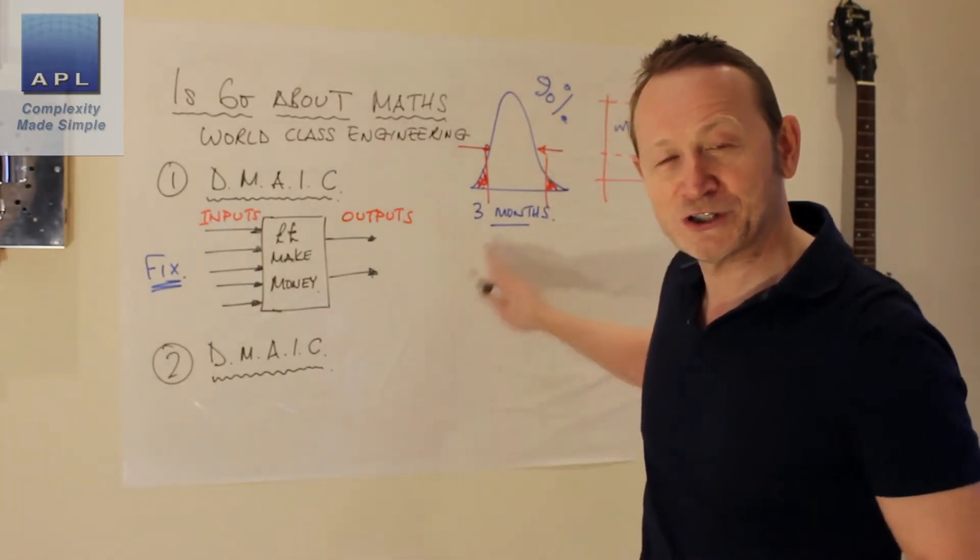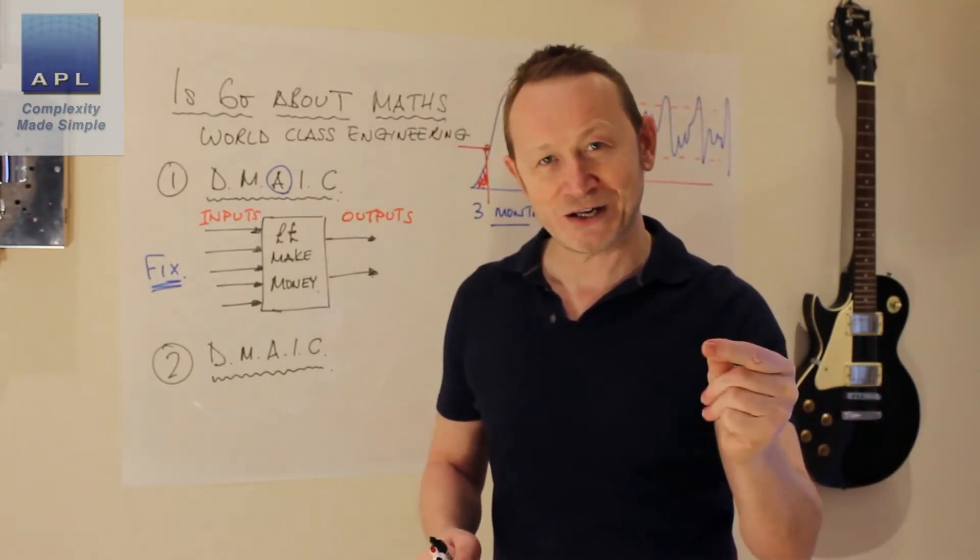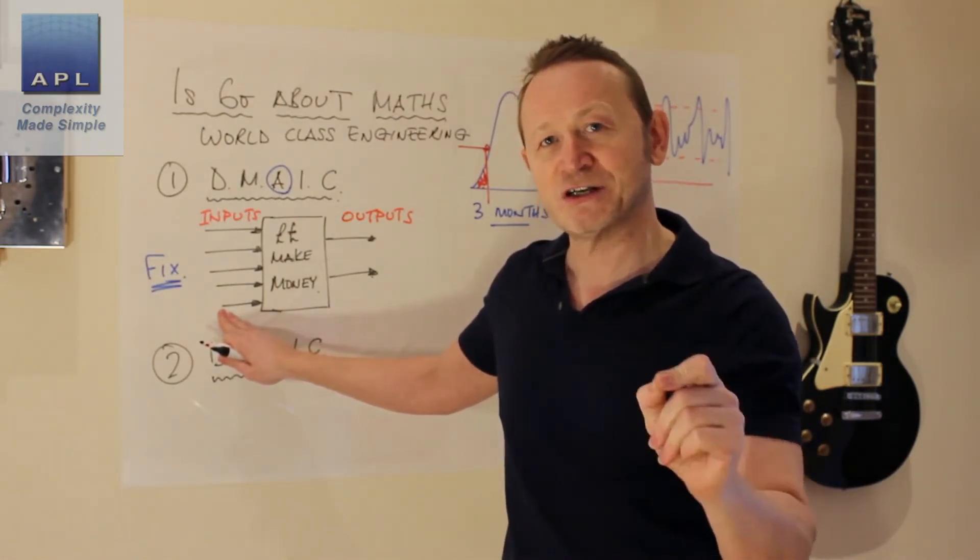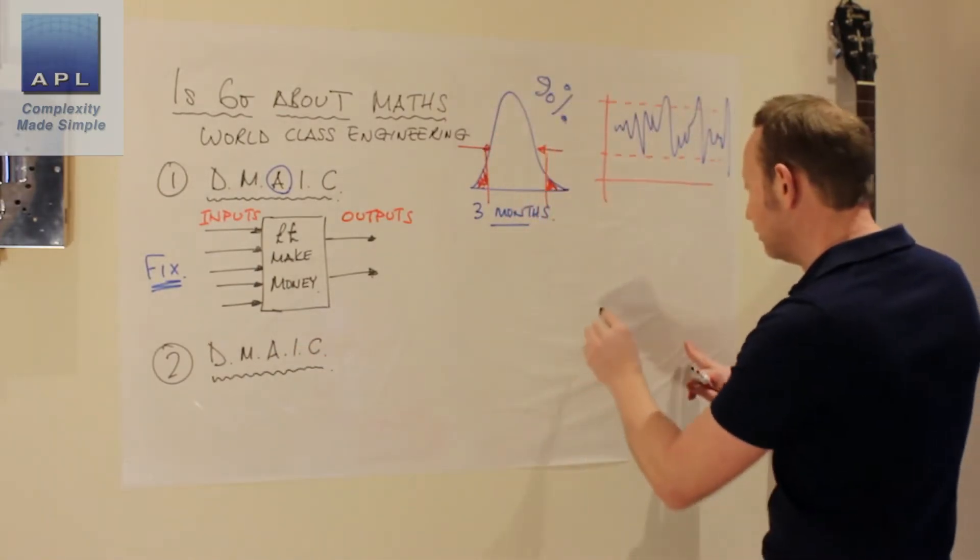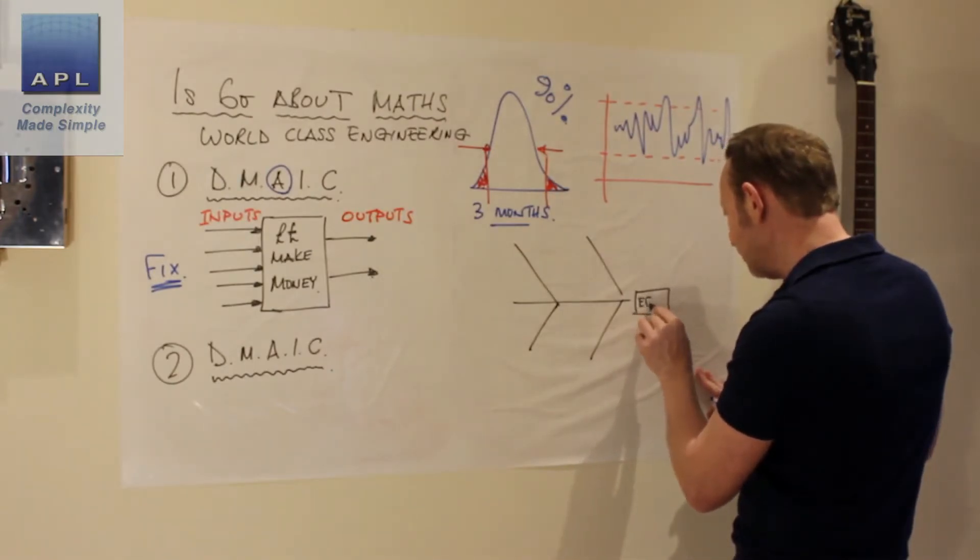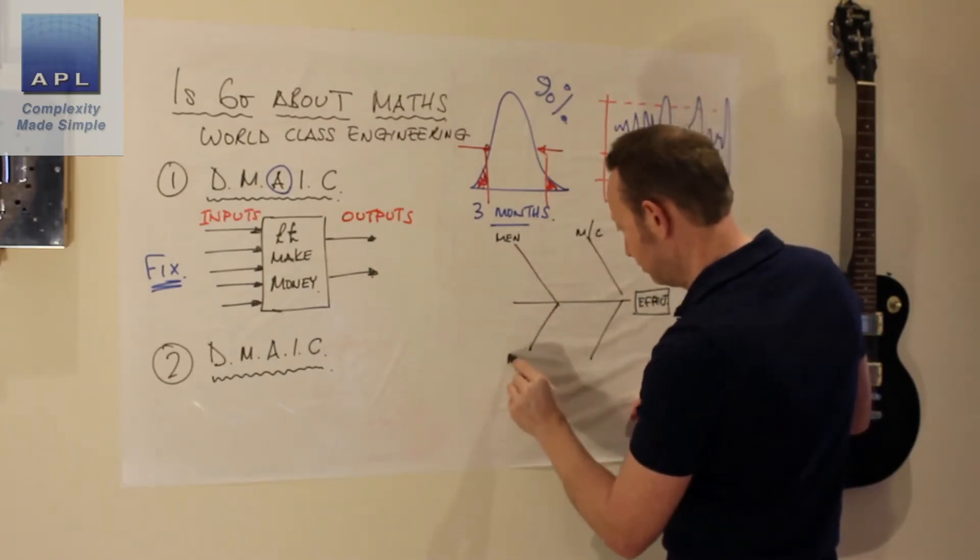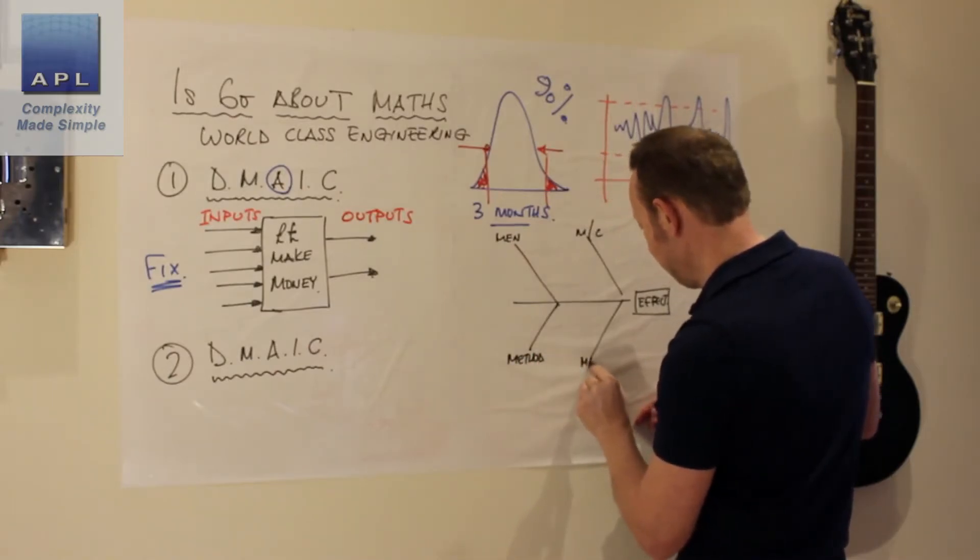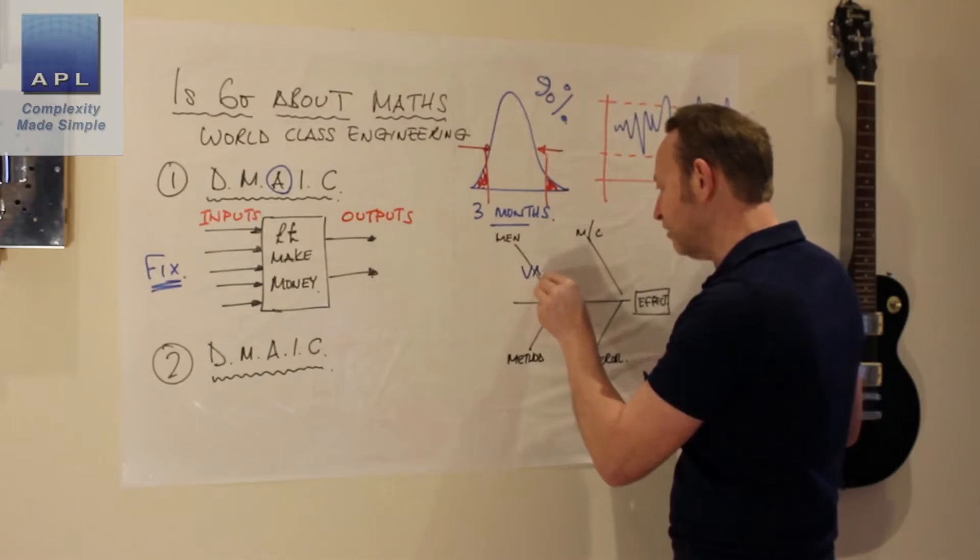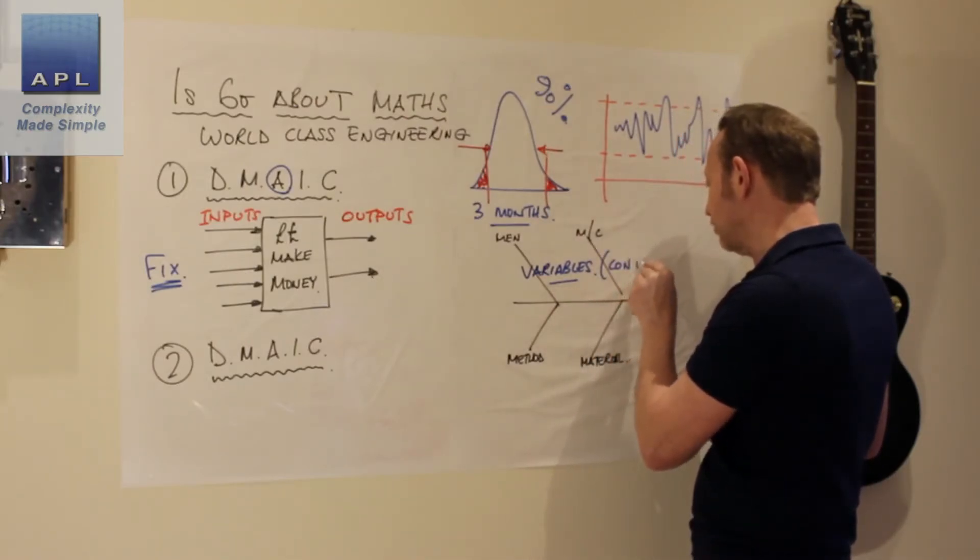Once I see that I have a problem with noise, what's the tool I'm going to pull out the box for here? Define, measure, analyze. What's the analysis I'm going to do? I need to analyze all the inputs and their current state of control. So my weapon of choice to do this is not mathematics at all, because I just want to use physics. It's the cause and effect diagram. So what are we going to have here? Man, machine, method, material. What am I going to put on this thing?